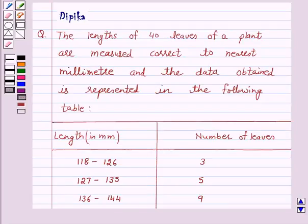Hello and welcome to the session. I am Deepika here. Let's discuss a question which says the lengths of 40 leaves of a plant are measured correct to nearest millimeter and the data obtained is represented in the following table.